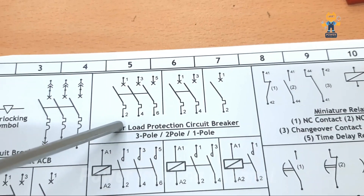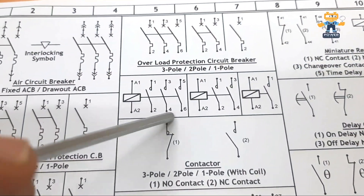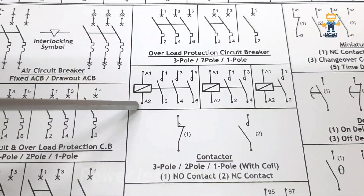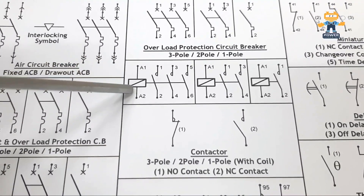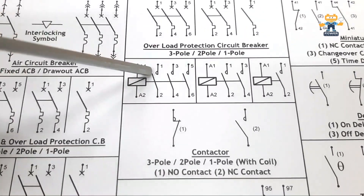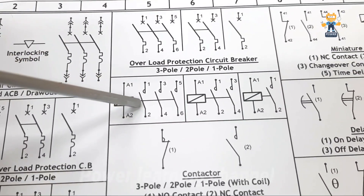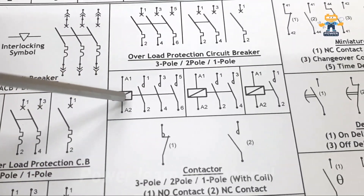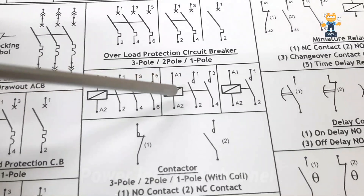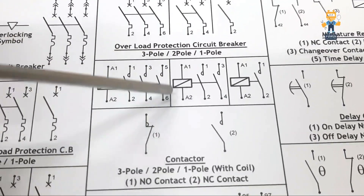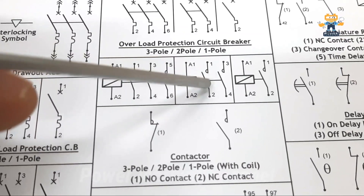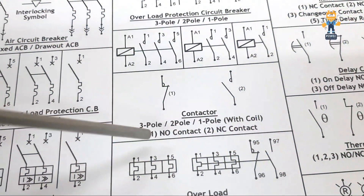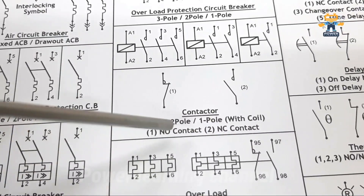Here we have contactor symbols — three-pole, two-pole, and one-pole. This is the contactor coil A1 and A2. These are the main contacts: 1 and 2 for line one (red phase), 3 and 4 for yellow phase, 5 and 6 for blue phase. For a two-pole contactor, we connect the coil voltage to A1 and A2 — these are the power contacts.